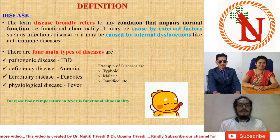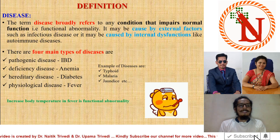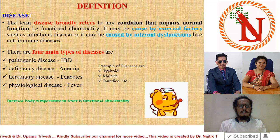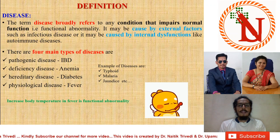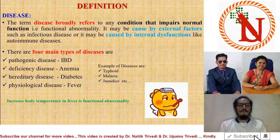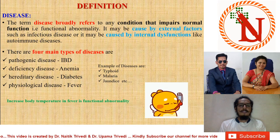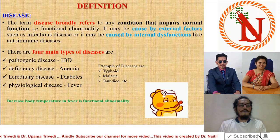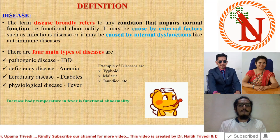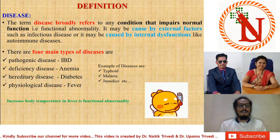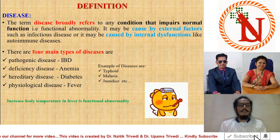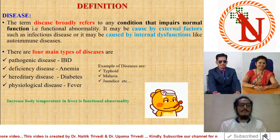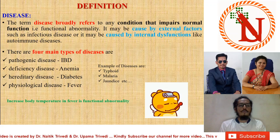Now we'll go to the definition. First it is essential to know the definition of disease. The term disease broadly refers to any condition that impairs normal function — in short, functional abnormality is known as disease. It may be caused by external factors such as infectious disease, or by internal dysfunction like autoimmune disease. I have divided disease into four categories.